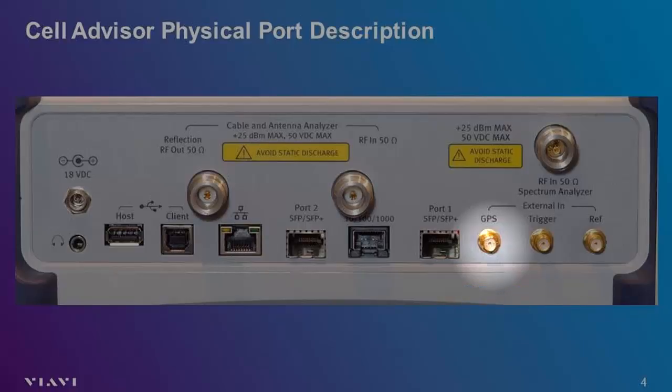All measurements performed on the unit will be saved with location information once the unit's GPS is locked. Certain measurements may even be placed directly on a map loaded into the device. The JD740 and JD780 series will also utilize the GPS signal to stabilize the internal oscillator, providing more accurate frequency and timing-based measurements. This increased accuracy will be maintained for approximately 72 hours after the unit loses GPS signal, so the unit may be taken indoors without sacrificing accuracy.